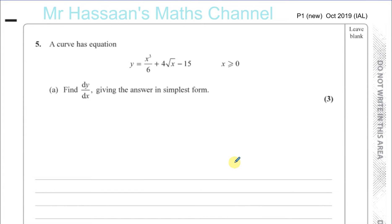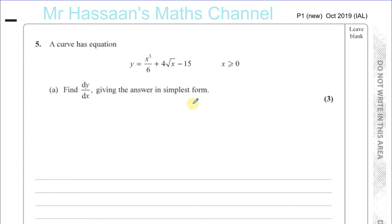Now for question number 5 from the October 2019 P1 International A-Level paper. The curve has an equation y equals x cubed over 6 plus 4 times root x minus 15, where x is greater than or equal to 0. We have to find dy/dx, giving the answer in its simplest form, so we have to differentiate this with respect to x.